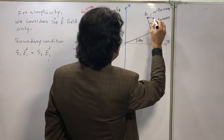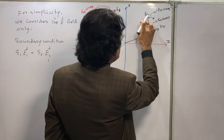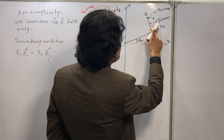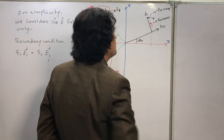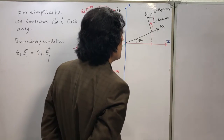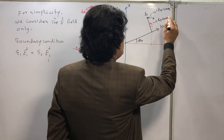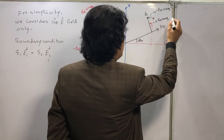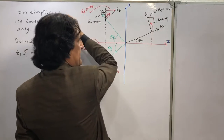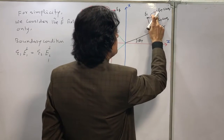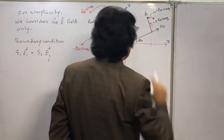Similarly for the transmitted wave Eₜ, we have two components: E₀ₜ cosθₜ, and a component along the negative z direction equal to −E₀ₜ sinθₜ.